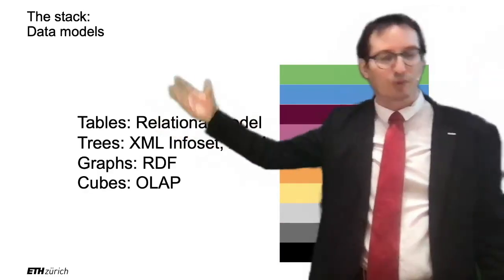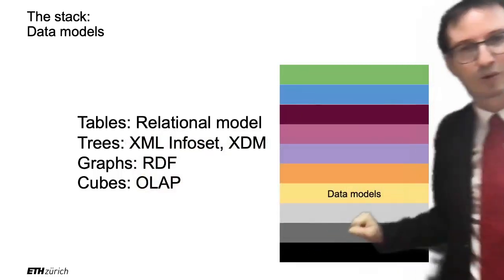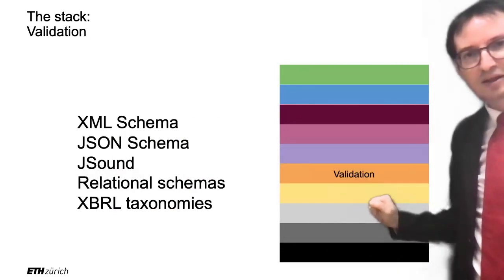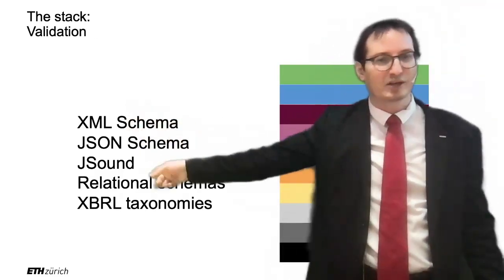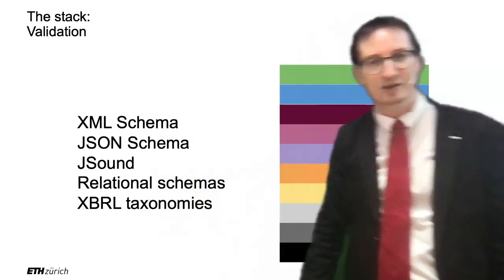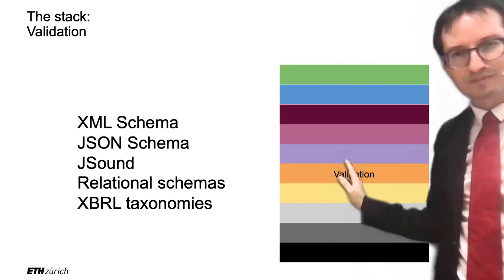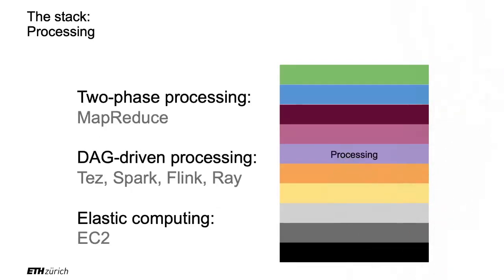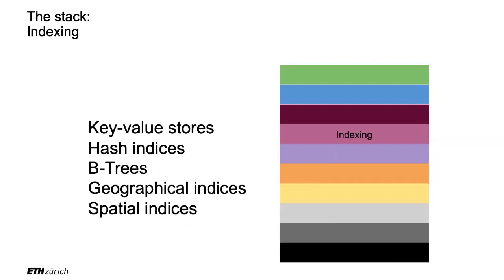For data models, we look at tables — we already looked at those — but we'll also look at trees, graphs, and cubes: a lot of different shapes of data. Then we'll go into validation: XML schema, JSON schema, relational schemas — that's what we already know, the columns and types. XBRL taxonomies for data cubes. Then we look at processing — probably the coolest part of the lecture — because this is when the data center is set into motion with MapReduce. We'll also look at Apache Spark. Then indexing: B-trees, B+ trees, hash indices.